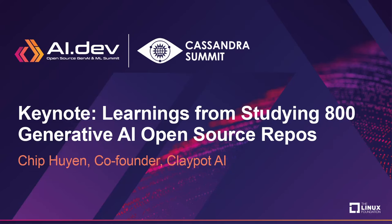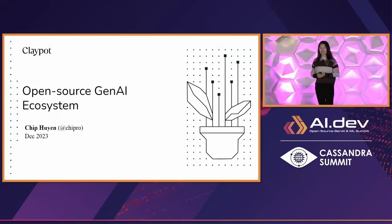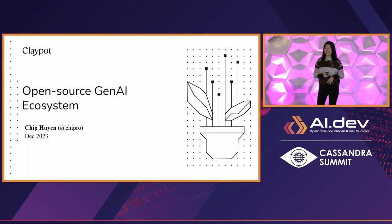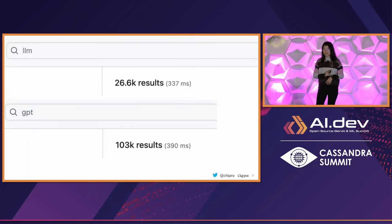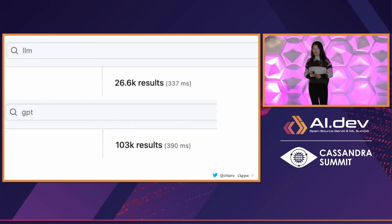Hello, everyone. Because this is a Linux Foundation event, I thought I should do something fun and go through all the GitHub repos on GitHub AI that I could find. It turned out to be an impossible task. When I went to GitHub and entered LLM, I immediately found 26,000 results.